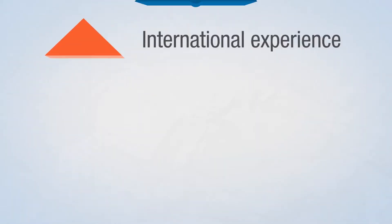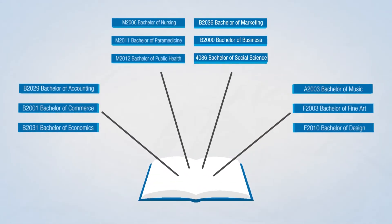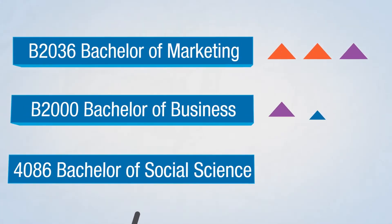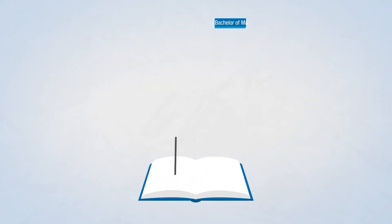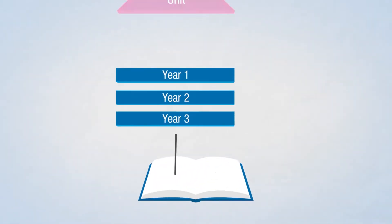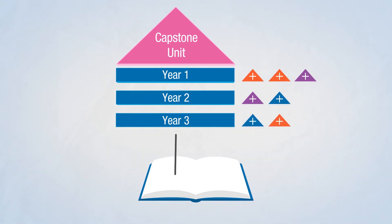Check the handbook entry for your course code to find out what capstone units you can consider. Some courses have capstone options, while other courses have one capstone unit. You need to follow the course rules published on the handbook, but you can choose additional capstone units to study as electives.